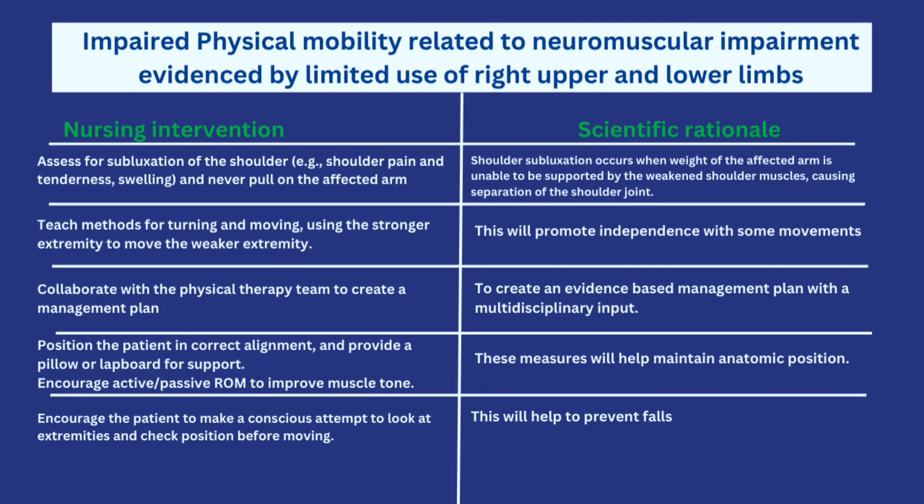Here are the nursing interventions and scientific rationale. First, assess for subluxation of the shoulder and instruct the patient not to pull the affected arm. In Mr. Ajao's case, it is the right limbs that are affected. The issue with stroke is that once the shoulder muscles cannot support the weakened arm, it may cause the shoulder joint to actually separate. So you always want to check for that and make sure it doesn't happen.